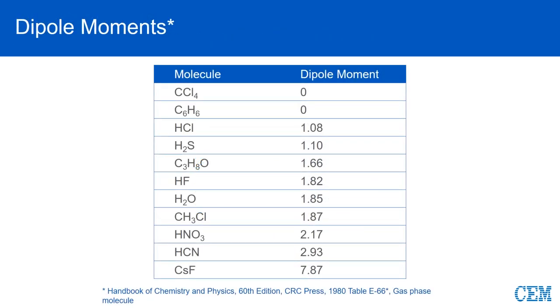There are many ways to predict if a molecule can be heated by microwave energy. The easiest is to look at the dipole moment. The stronger the dipole, the more easily it will be heated in a microwave field. In our table, you can see that all mineral acids have a dipole moment above 1.0. Nitric acid is a superabsorber at above 2.0.